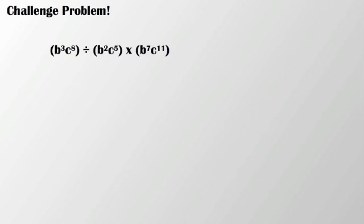Now for our first challenge problem — from time to time I'll give you a challenge problem. You get to try it out on your own, and then we discuss the answer in class. The problem is: b cubed times c to the 8th, divided by b squared times c to the 5th, times b to the 7th times c to the 11th. Order of operations is important here. Good luck!